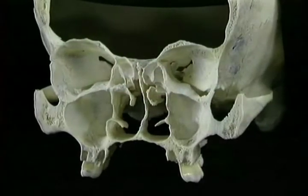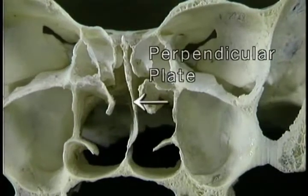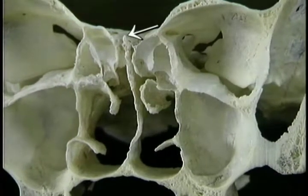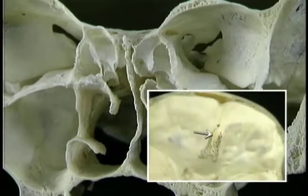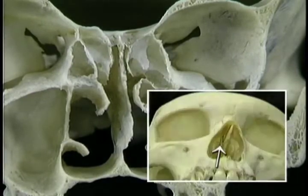Before we go further, we need to understand the ethmoid bone. We've encountered its various parts but now we'll see the whole of it. The perpendicular plate of the ethmoid forms a large part of the bony nasal septum. The upward projection is the crista galli, which rises up in the floor of the anterior cranial fossa. On each side of the crista galli are the cribriform plates, which we've seen already from above and from below.